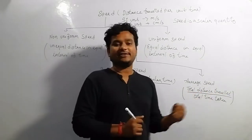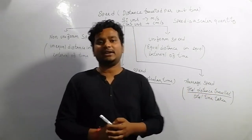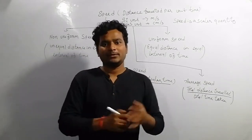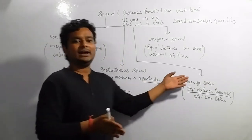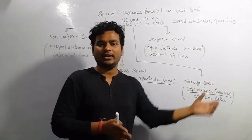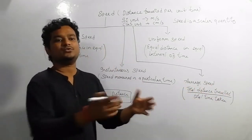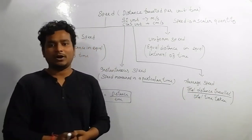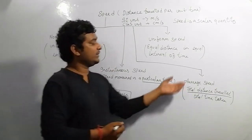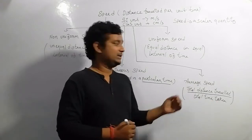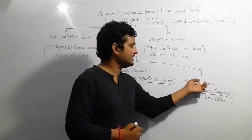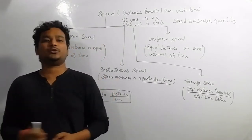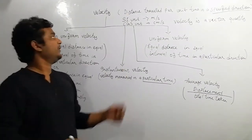Average speed is the total distance traveled divided by the total time taken. For example, when traveling from one place to Ranchi, if the total distance is 140 kilometers and the time taken is around 4 or 5 hours, we divide that distance by the time interval to get the average speed. It is the ratio of total distance to total time taken.